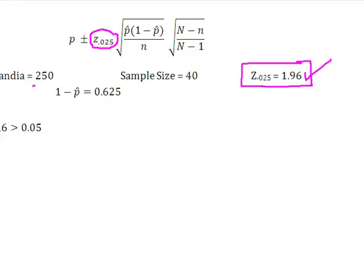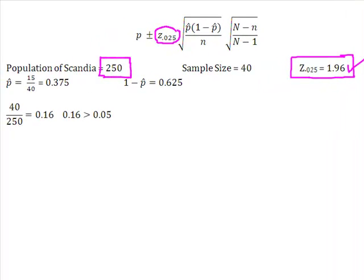And I also know, given from the problem, that the population of Scandia is 250, which is my big N, which I need here and here. So now, what have I done so far? I have gathered together everything that I need for my formula. I have my confidence interval. I have P hat. I have 1 minus P hat. I know what my big N or my population value is. I know what my little n or my sample value is.